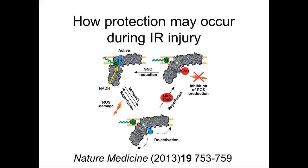Normally upon reperfusion, Complex I rapidly reactivates and produces a burst of ROS damage, which underlies much of the ischemia-reperfusion injury during a heart attack. However, if we inject MitoSNO upon reperfusion, it transfers nitric oxide onto cysteine 39 of the ND3 subunit of Complex I. This S-nitrosylation slows down the reactivation of Complex I and prevents the burst of ROS. The modification is reversed by glutathione and thioredoxin inside mitochondria — it only slows reactivation by five or ten minutes, but that's sufficient for the heart to recover and for mitochondria to return to normal function without producing a damaging ROS burst. This approach is something we hope to test in further animal models and eventually use as a treatment for heart attack.